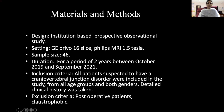Materials and methods. This is an institution-based prospective observational study using GE Brivo 16-slice CT and Philips MRI 1.5 Tesla. My sample size is 46. Duration is for a period of two years, from October 2019 to September 2021. Inclusion criteria: all patients suspected to have cranial-vertebral junction disorder from all age groups and both genders. Detailed clinical history was taken. Exclusion criteria: post-operative patients and claustrophobic patients.